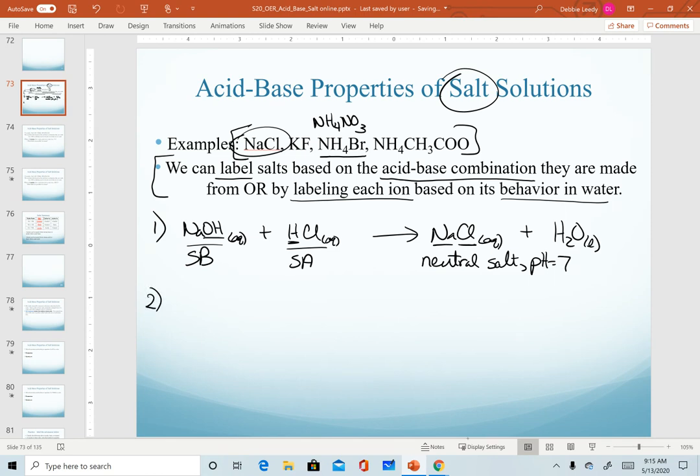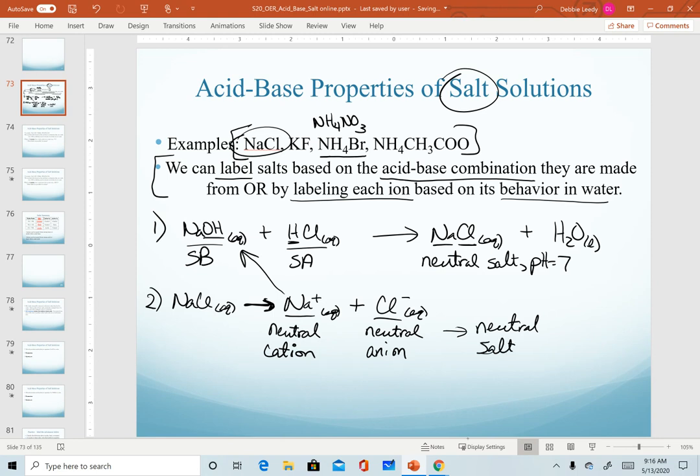Now the second method we can use to predict or label this salt is to look at the ions that comprise this salt. As this dissociates, it does so into a sodium ion and a chloride ion. Now I can look at the nature of each of my ions to identify if these are acidic, basic, or neutral. Sodium is one of the cations in my strong bases, and therefore, sodium is a neutral cation. For chloride, it is an anion from a strong acid, and therefore, it is a neutral anion. Since both of my ions are neutral, this gives us a neutral salt with a pH of 7.